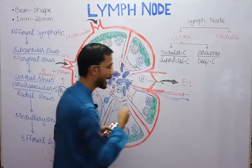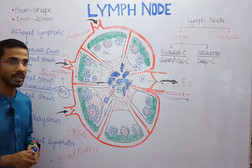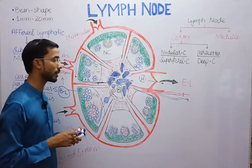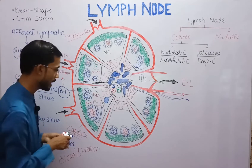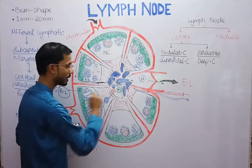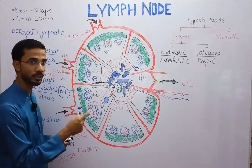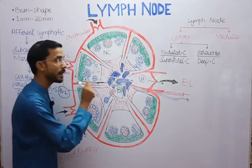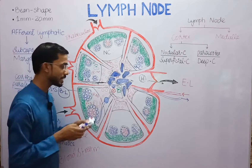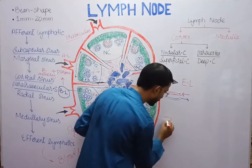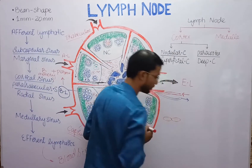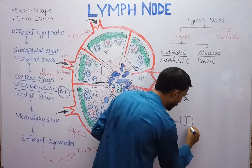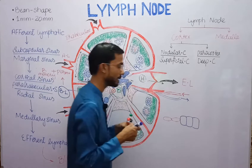Now we will see how blood enters into the lymph node and exits from it. Blood enters through arteries, which convert into arterioles and then capillaries. Capillaries convert into venules, which then exit through the lymph node as veins. At the paracortex region, there is a special structure.